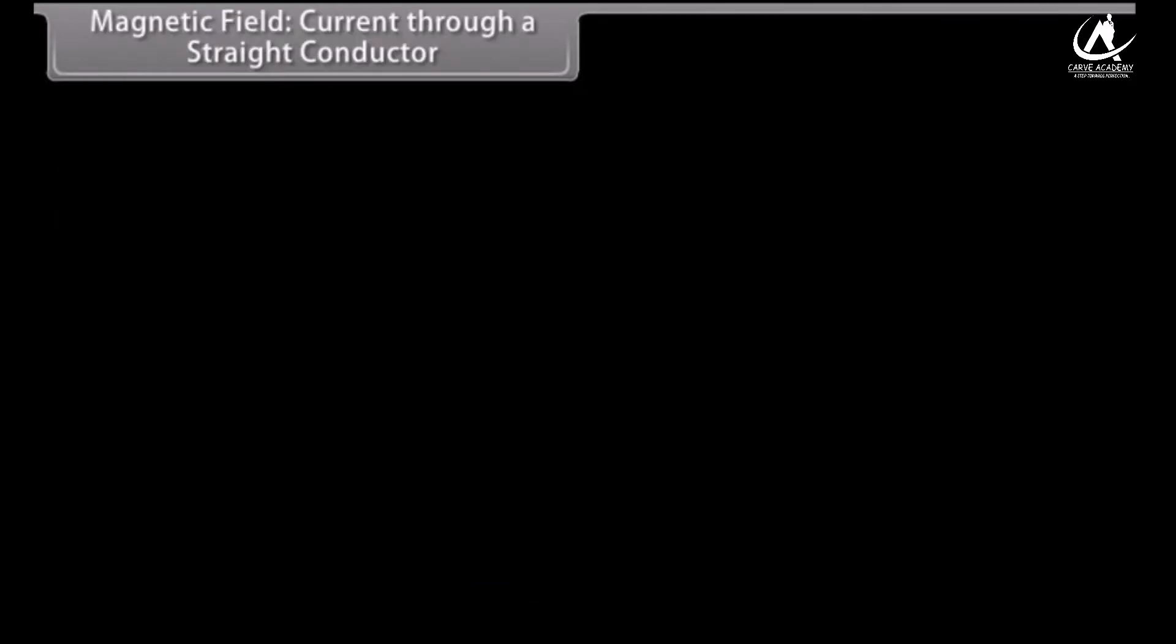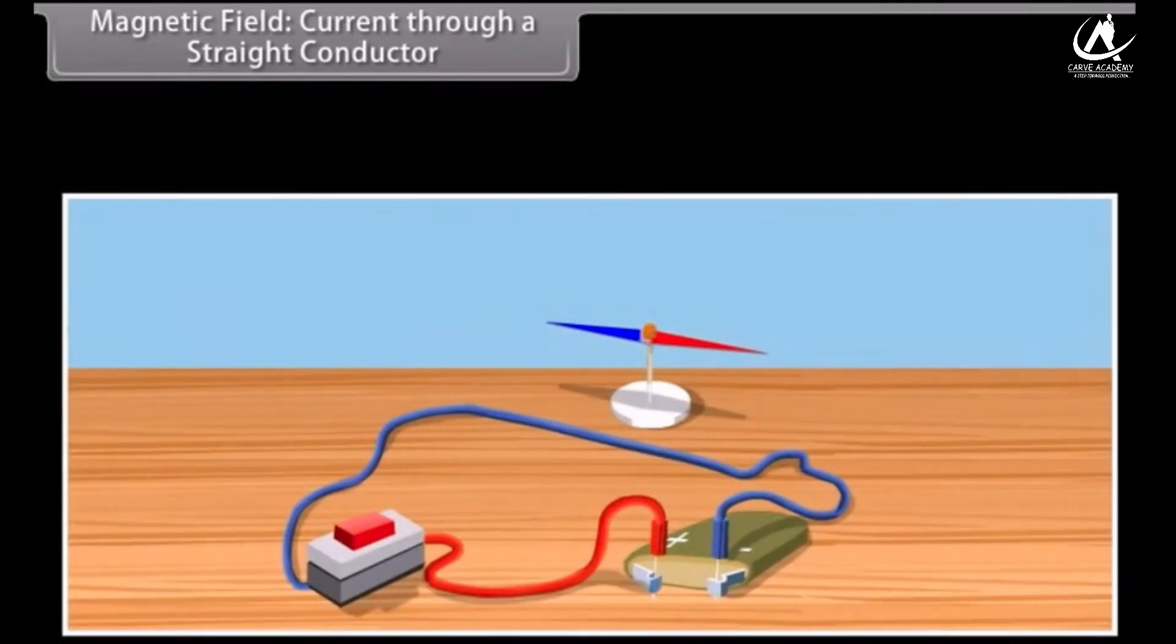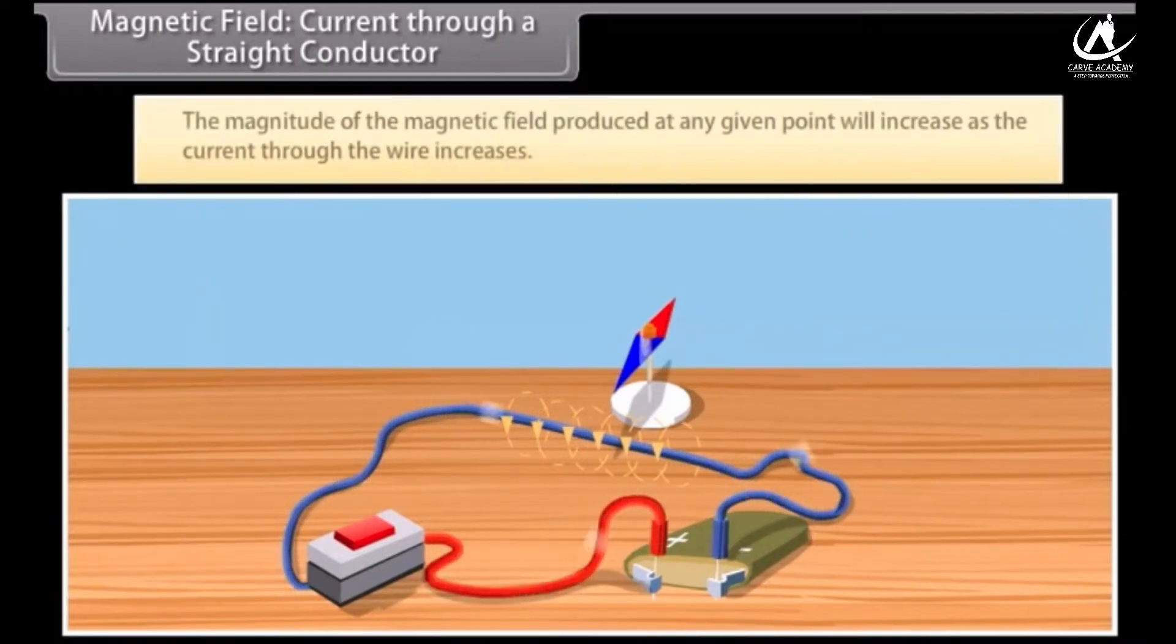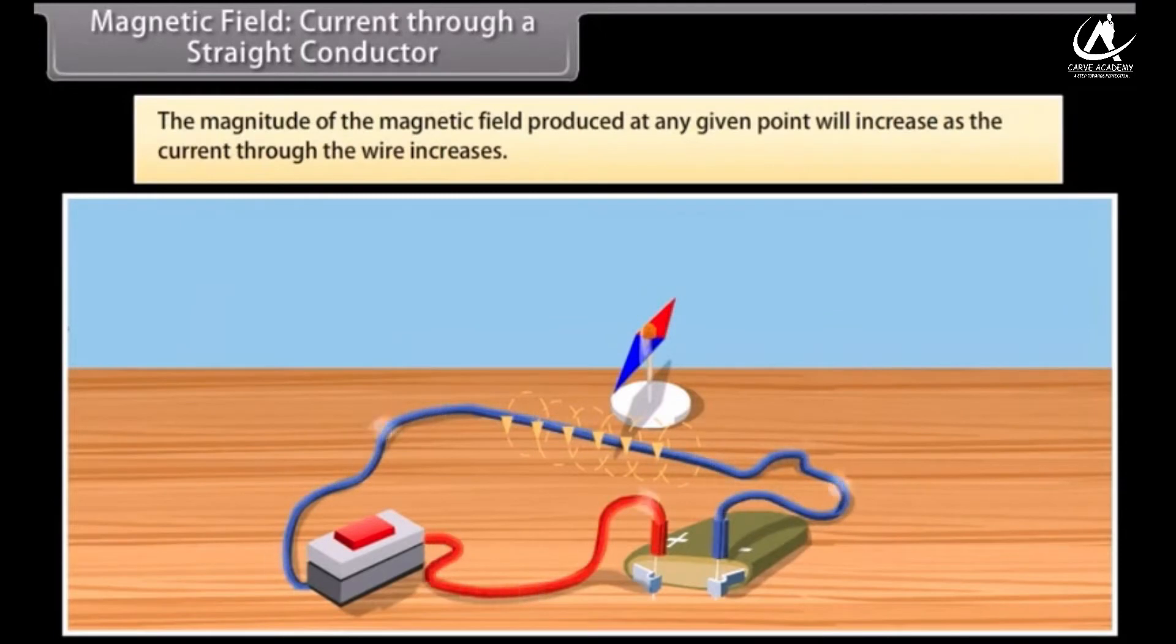Magnetic field current through a straight conductor. As you have seen earlier, let us see what happens when we change the current that is passing through the wire. The effect on the compass also varies. So if you increase the current, the deflection of the needle of compass will increase. From this we know that the magnitude of the magnetic field produced at any given point will increase as the current through the wire increases.